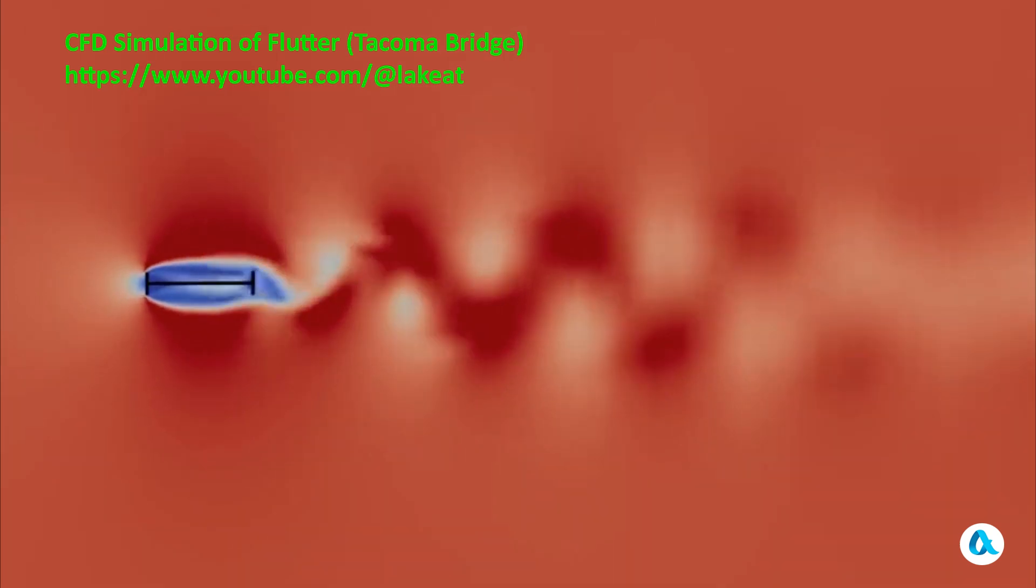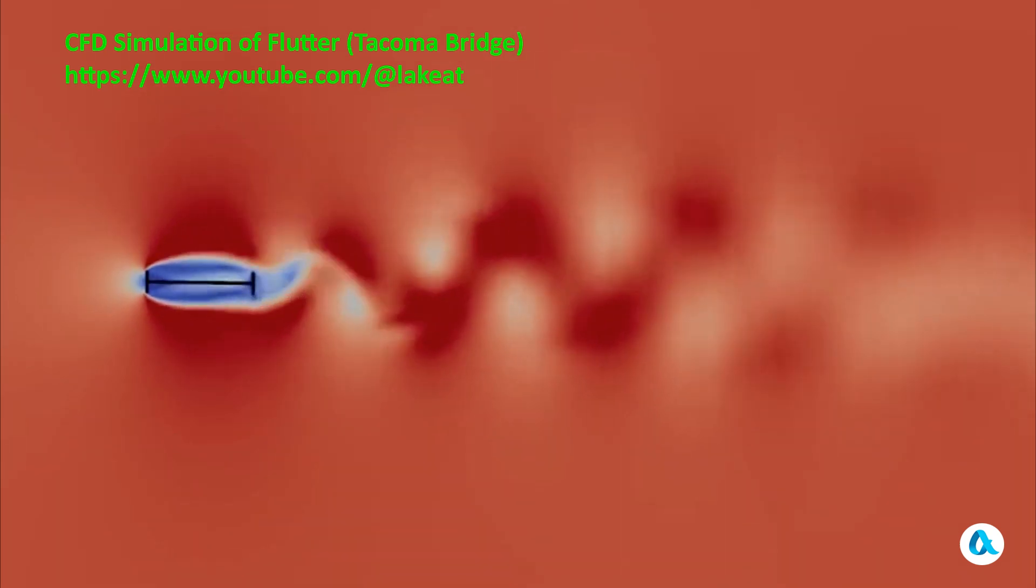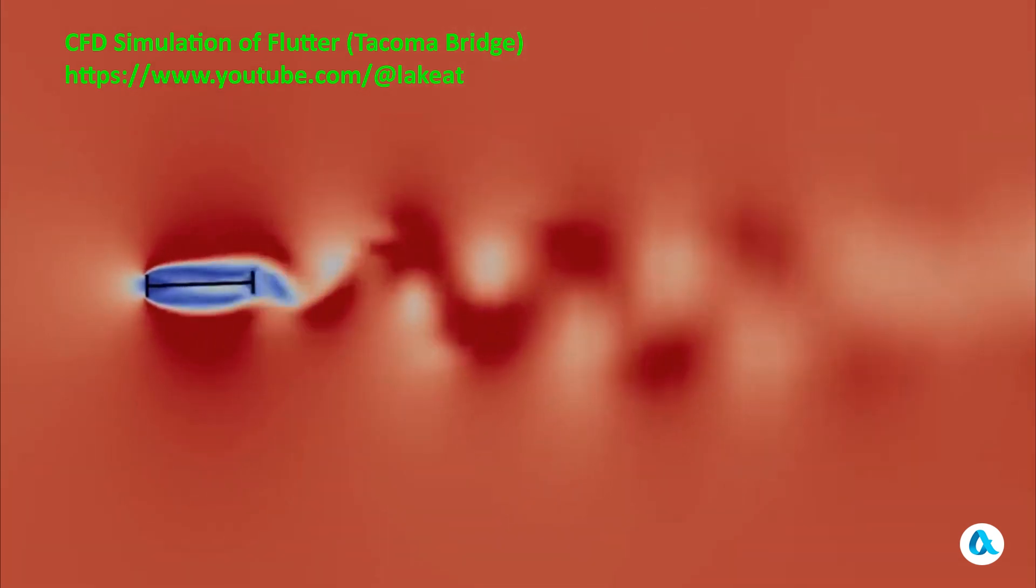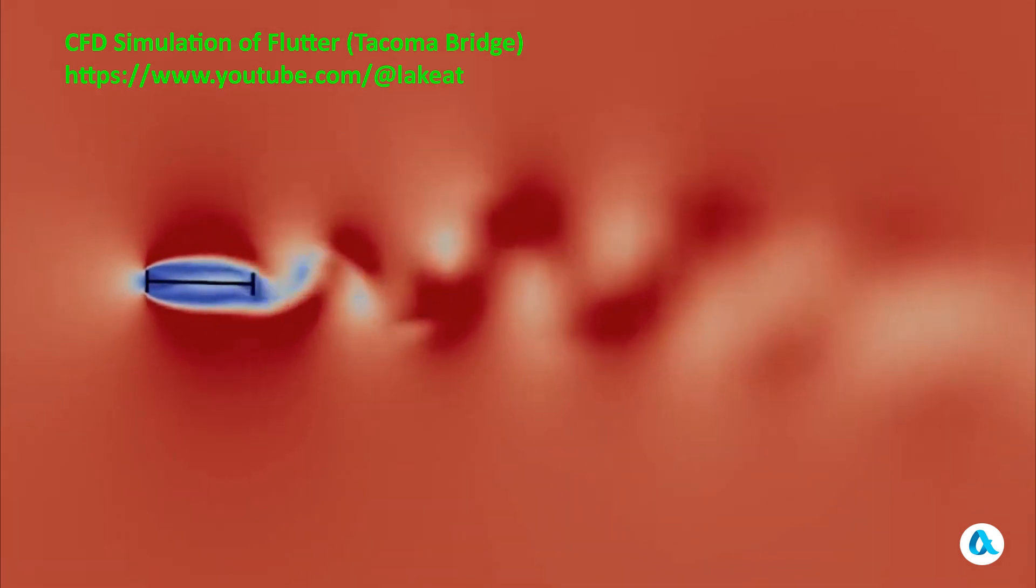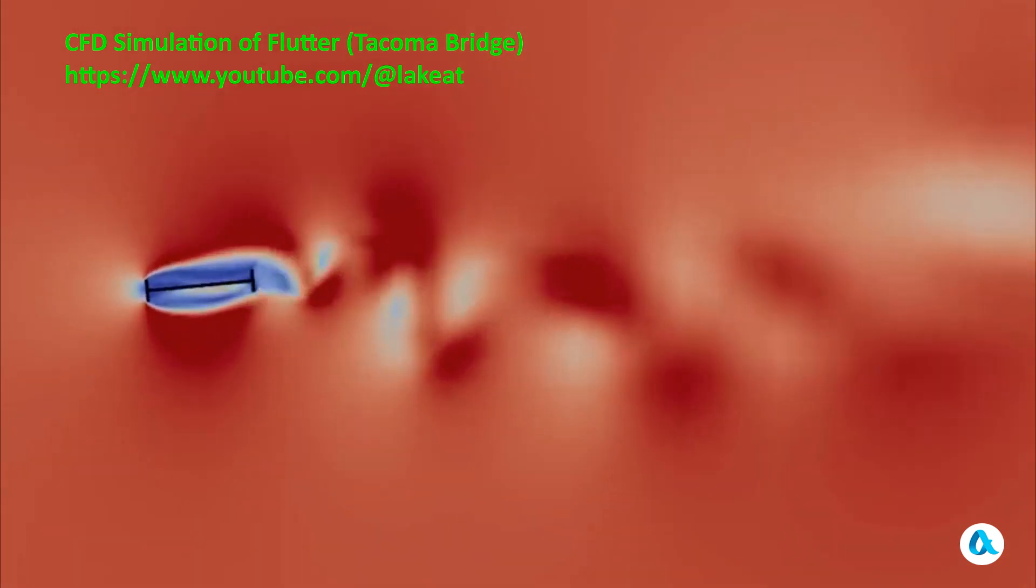As long as the oscillation amplitude is small, a Karman vortex street indeed forms behind the bridge. But then the oscillations become more intense and their nature changes abruptly, suddenly transitioning into flutter.